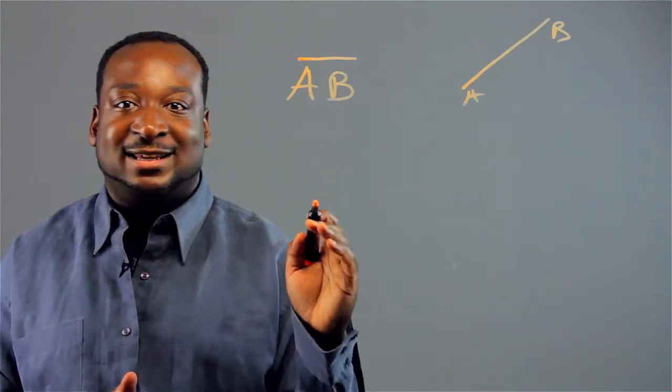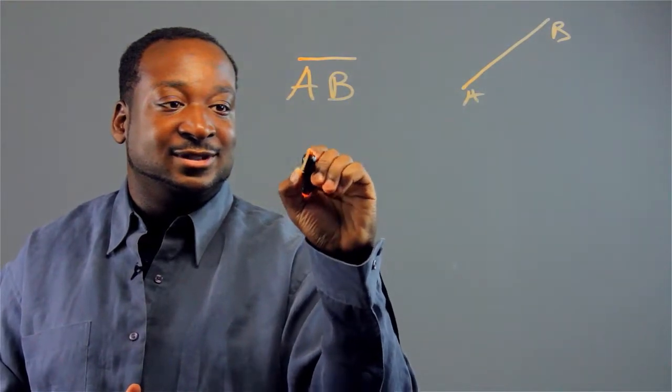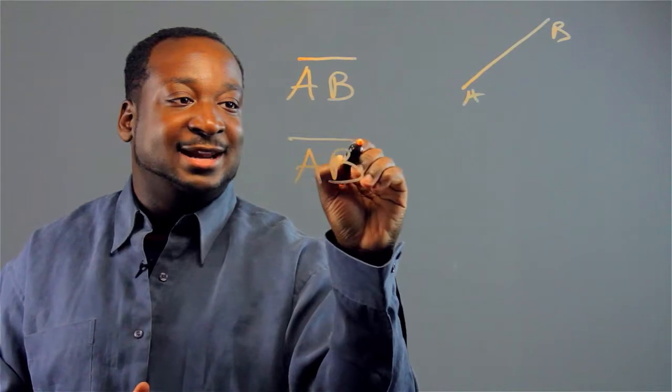Now, if we add arrows on the end, that would be a line, line AB. Let me show it to you. Adding arrows at the end.